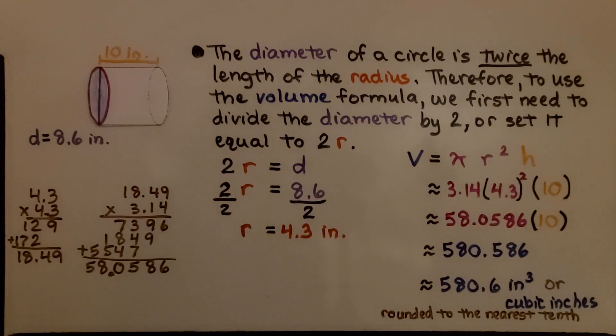586 thousandths to round it to the nearest tenths. The 8 tells the 5 to go up and then the 8 and 6 drop off. We have 580.6 inches cubed or cubic inches rounded to the nearest tenths.